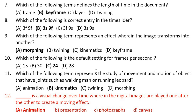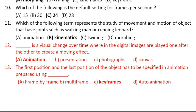Question 12: This is a visual change over time wherein digital images are played one after another to create a moving effect. That is known as animation. Question 13: The first position and the last position of the object have to be specified in which animation type? When you know both the starting and ending positions, you can use the technique called keyframes.